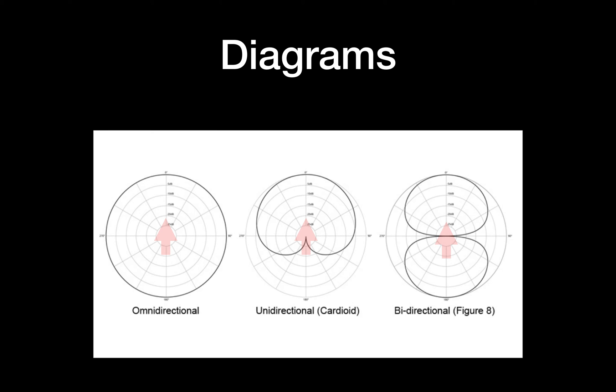We then look at the last diagram, the bidirectional or figure eight. Bi means two, so it's two directions, or figure eight. We can see that it's very effective at zero degrees and at 180 degrees, the top and the bottom. On the side, 270 and 90 degrees, it has a signal drop of more than 25 dB. That means the sound coming in from the sides is going to be quieter than the sound arriving at it from the front and the back.